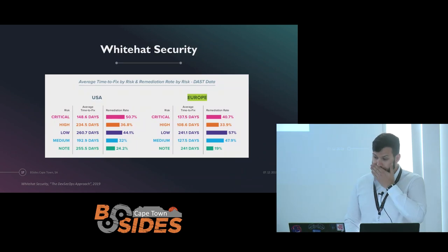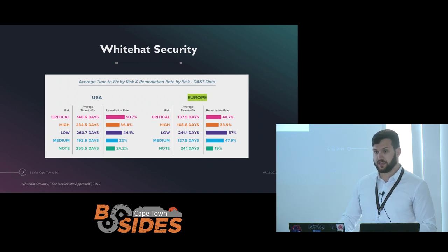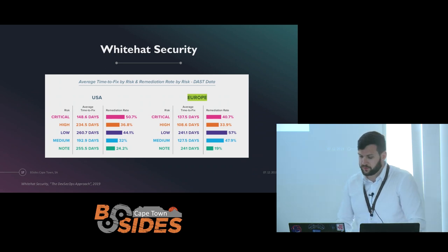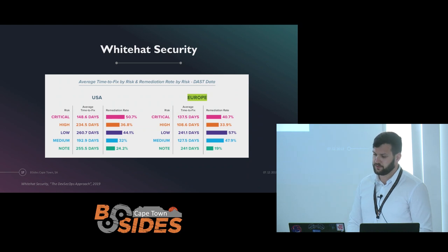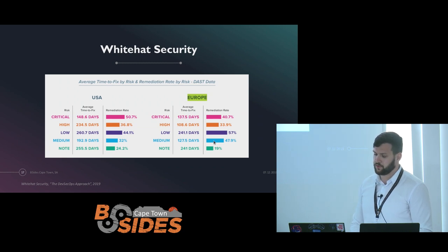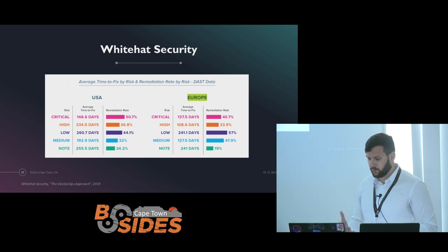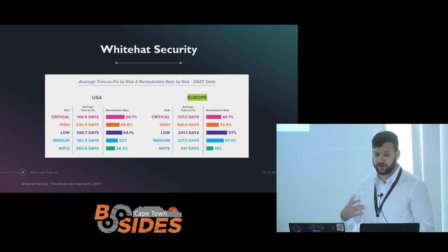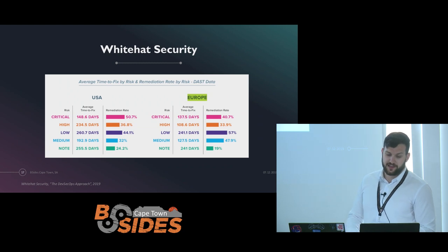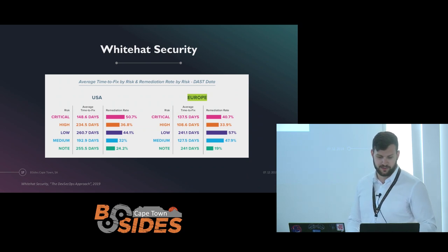Then you have some statistics from WhiteHat Security, another managed security service vendor operating out of the US. They do both DAST and SAST. What I thought was the most critical takeaway was the difference in average time to fix vulnerabilities between the USA and Europe — it's massive. I think that's partially because GDPR regulations are in place in Europe. AppSec seems to be getting more conscious attention, but it's not improving as quickly as we might expect — though that's good for keeping some of us in a job.